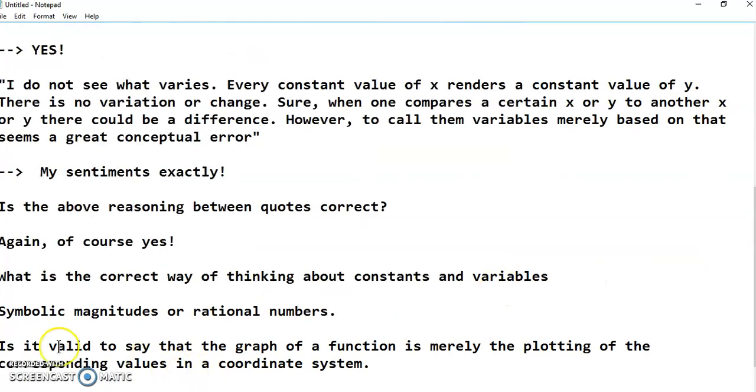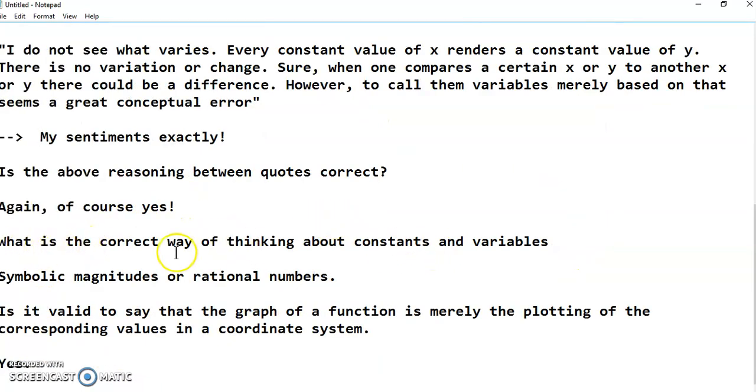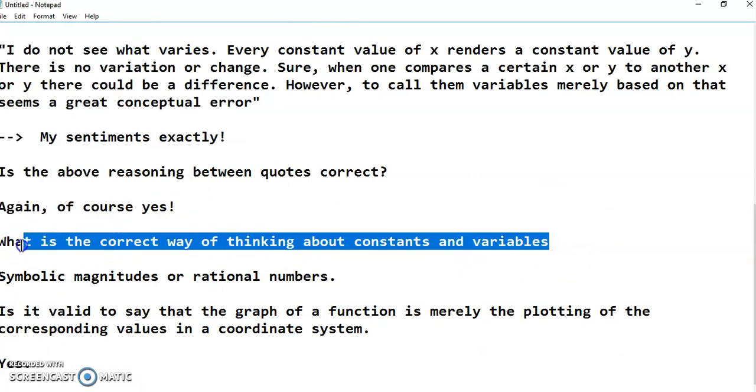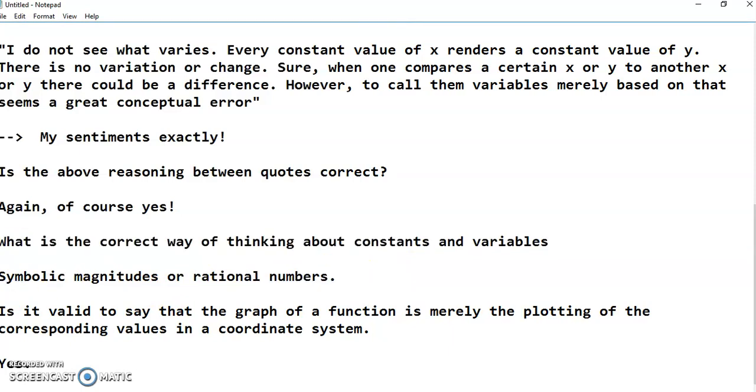So what he's saying here is what is the correct way of thinking about constants and variables? Well, and here's my response. I say that constants and variables are symbolic magnitudes or rational numbers.